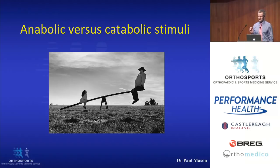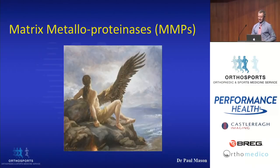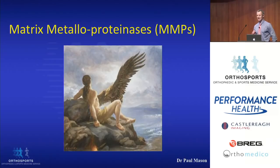To answer this question, we need to look at the main enzyme responsible for collagen degradation — matrix metalloproteinases, which I'll refer to as MMPs. This picture here is Prometheus, a figure in Greek mythology who stole fire from the gods. Because of his crime, he was subjected to eternal punishment — chained to a rock with an eagle that came every day and ate his liver.